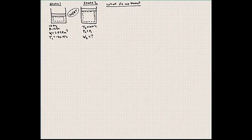Let's write what we know. We know the temperature at state 1 is minus 26.4 degrees Celsius and the specific volume at state 1 we can calculate because we know the mass and the volume. The volume is 1.595 meters cubed, the mass is 10 kilograms, so our specific volume is 0.1595 meters cubed per kilogram.